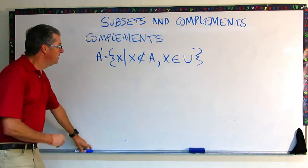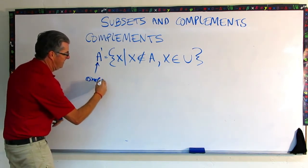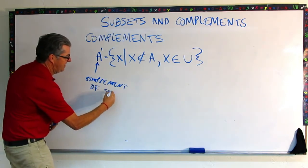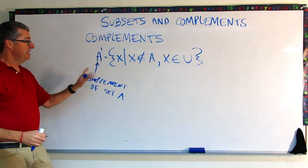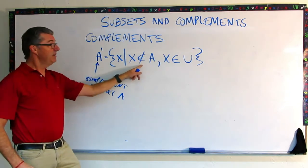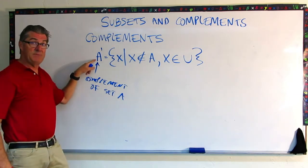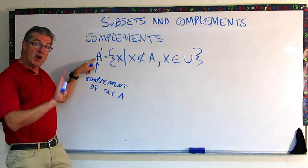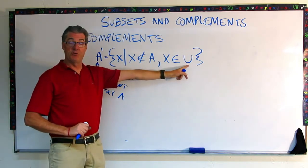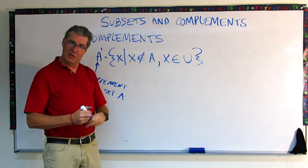The complement A prime, that means the complement of set A. So A prime is the set of all x such that x is not an element of A. So whatever is in set A, A prime's elements, the members of A prime are not in A. But they are in whatever universal set has been defined for the problem.